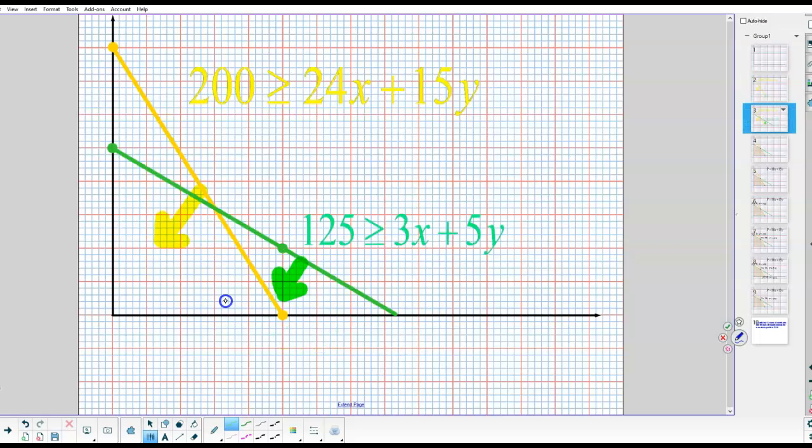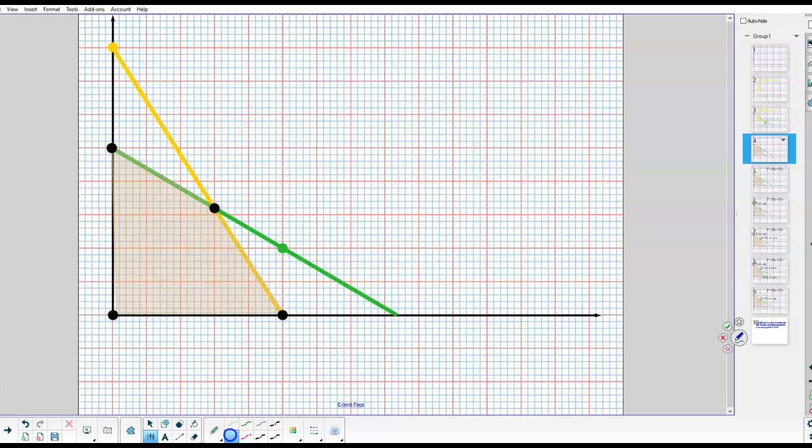The second equation is over here and this is where I had to use my slope. So remember my Y-intercept was a 25 right here. And remember I had to go down 3 and over 5 to find other points for my line. And notice the indication for the shading. I would shade down. And now we have a feasible region.